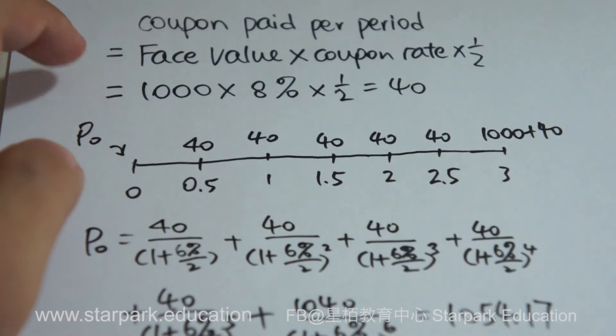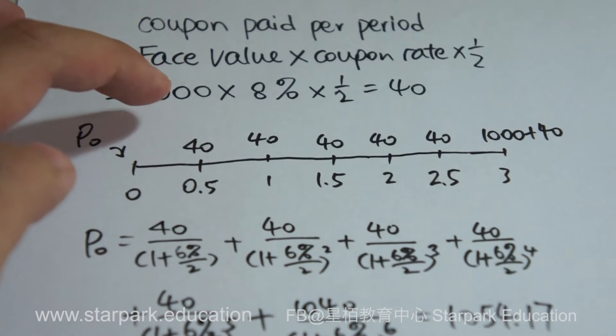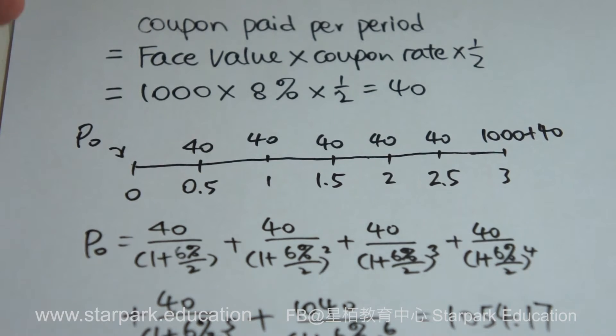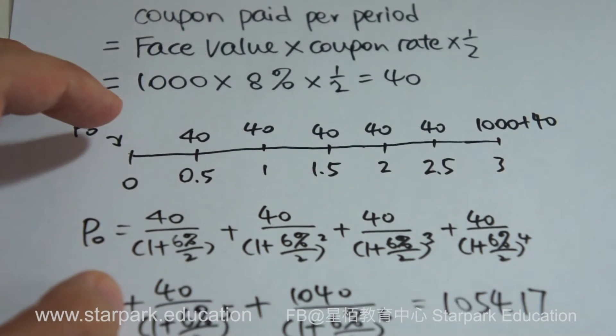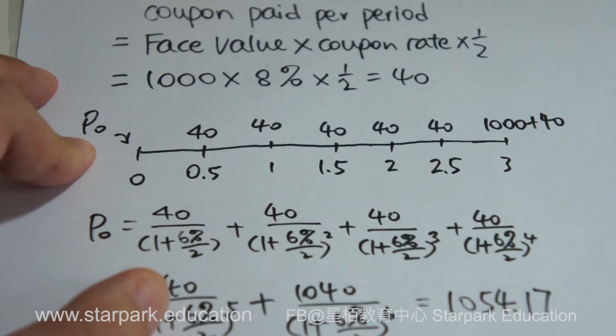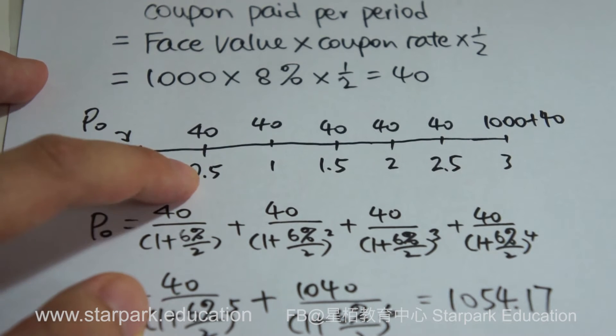We have calculated 1,000 times 8% and then multiplied by 0.5. The value should be 40. That means half a year I received $40. As you can see in the timeline, I need to calculate the P0, which means the bond price. As an investor, you pay the bond price P0. That is the unknown that you need to calculate.